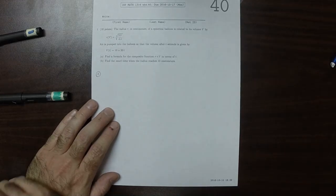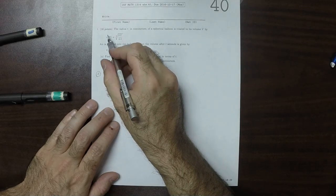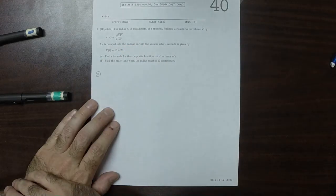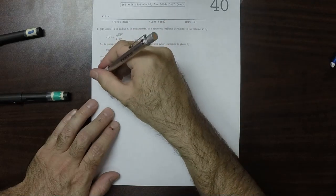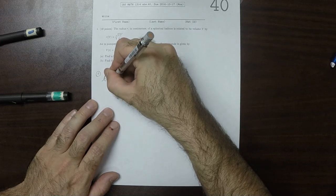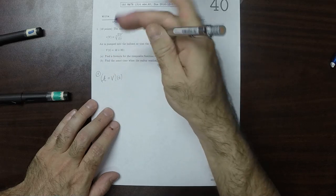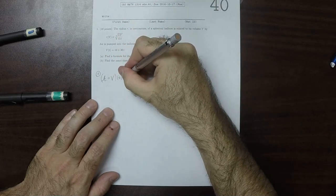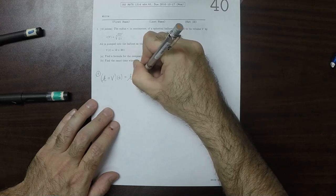So that means that because R is a function of V and V is a function of T, that means we can interpret R as a function of T in the following way. We can say that R composed with V, evaluated at T. Well, that is by definition, R of V of T.